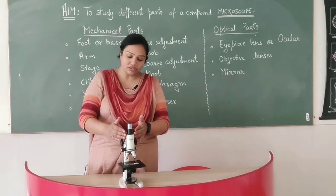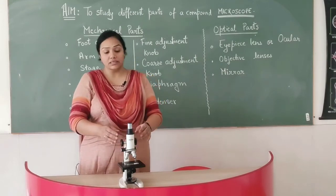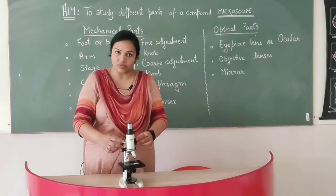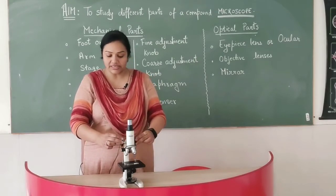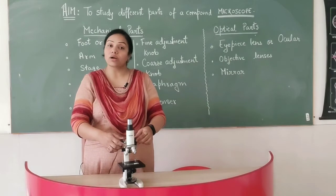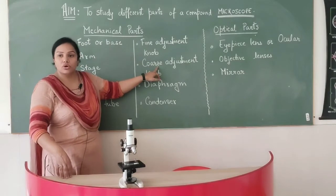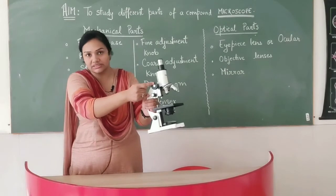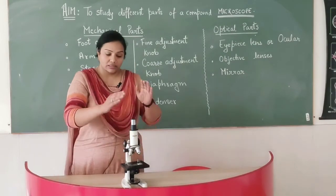Now coming to the adjustments. These adjustments help in focusing the object. The upper one, this bigger one, as you turn it, the body can move up or it can move down. This is called course adjustment knob. This course adjustment knob helps to move the body of this microscope up and down.